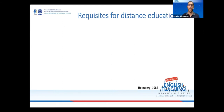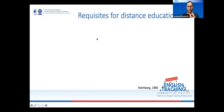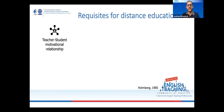There are seven requisites for distance education, written by Holmberg in 1985. You might say that's too old — let me tell you, it's not old at all, because I was born in 1985. It's not 2020, it's not 2015, but when you see these requisites, this is actually something that will call your attention. How could Holmberg in 1985 be talking about things that are still very valid today?